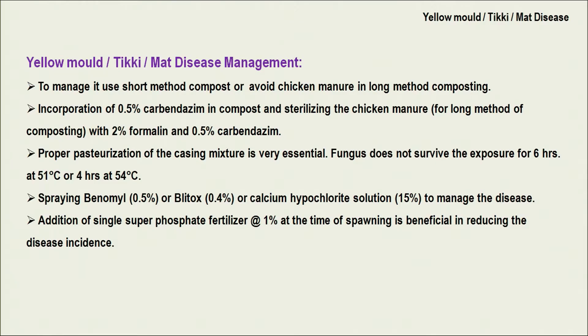We can manage yellow mold by incorporating 0.5 percent carbendazim in the compost. We also have to sterilize the chicken manure because chicken manure is a primary source for yellow mold, especially in the long method compost. The casing material should be properly sterilized. Alternatively, we can spray benomyl at 0.5 percent, Blight-ox at 0.4 percent, or use calcium hypochlorite solution treatment at 15 percent.